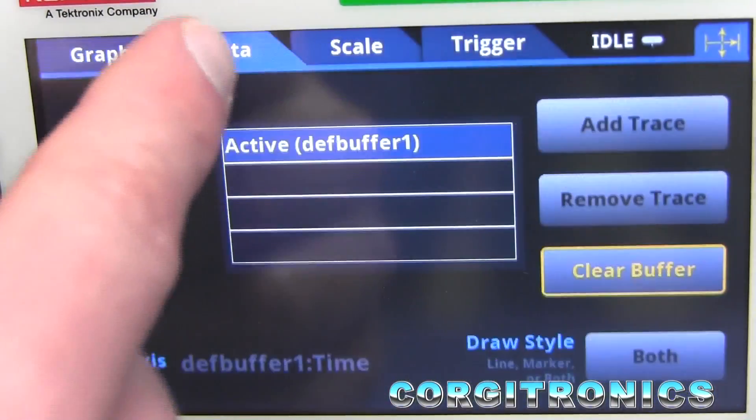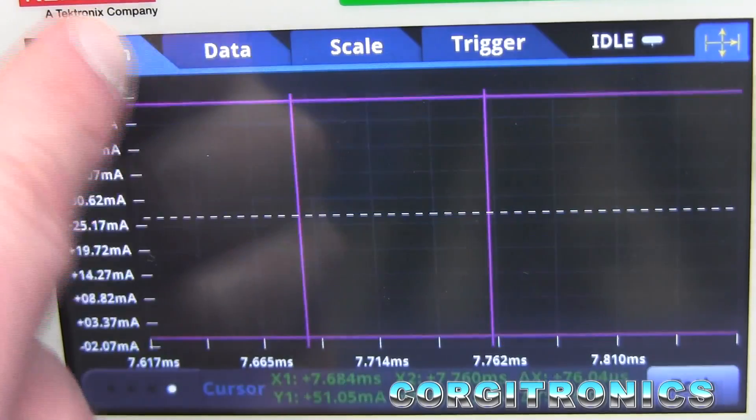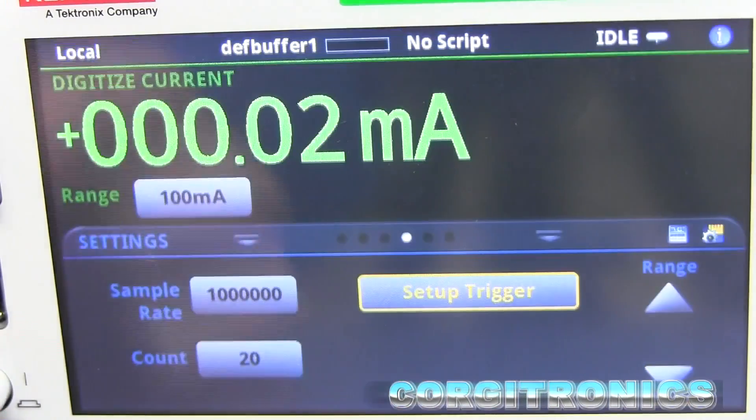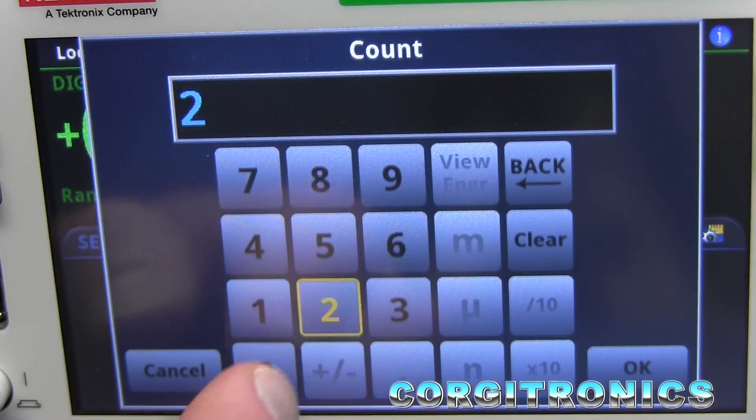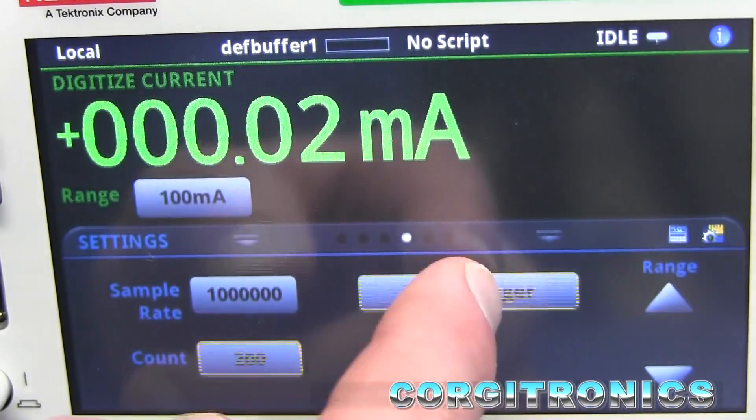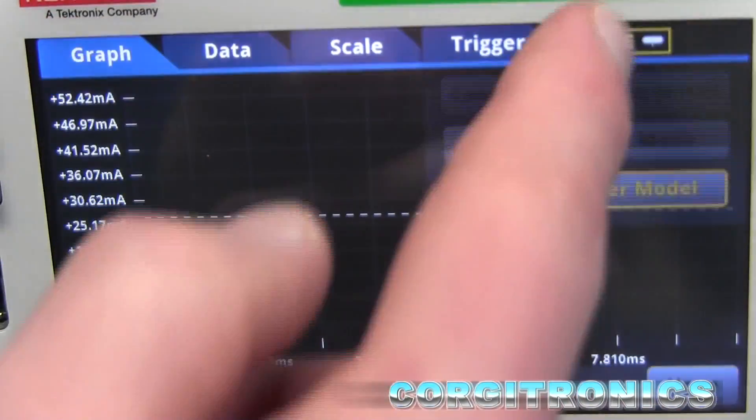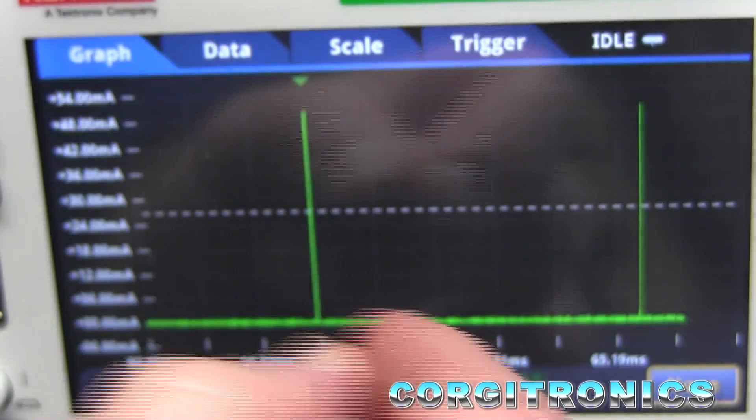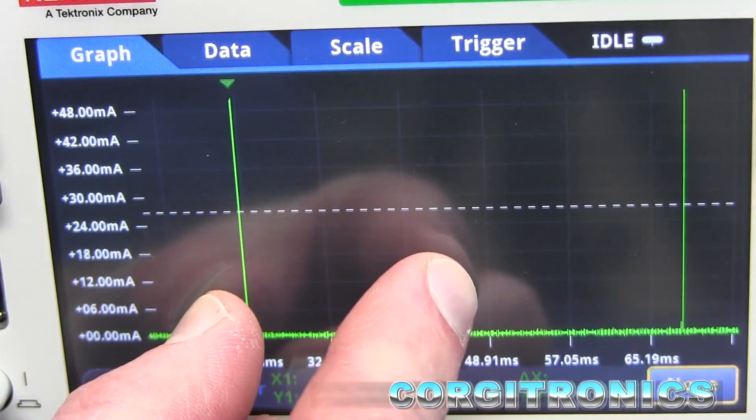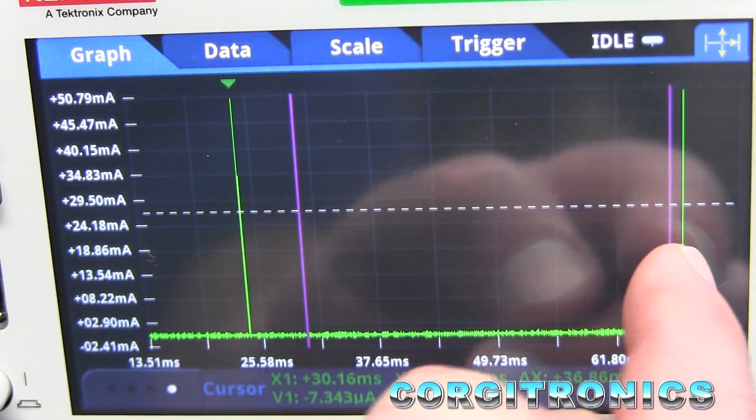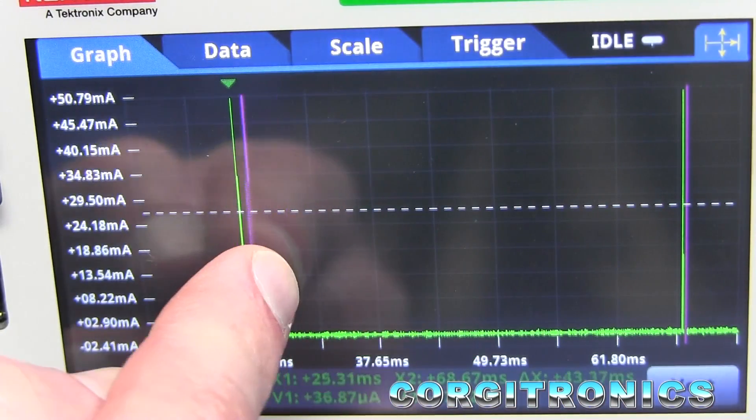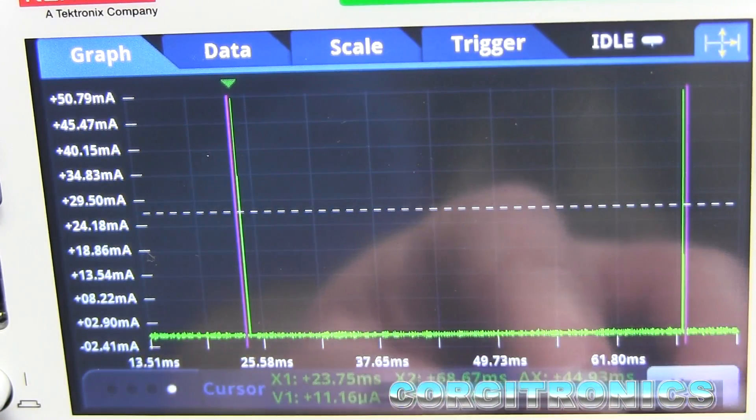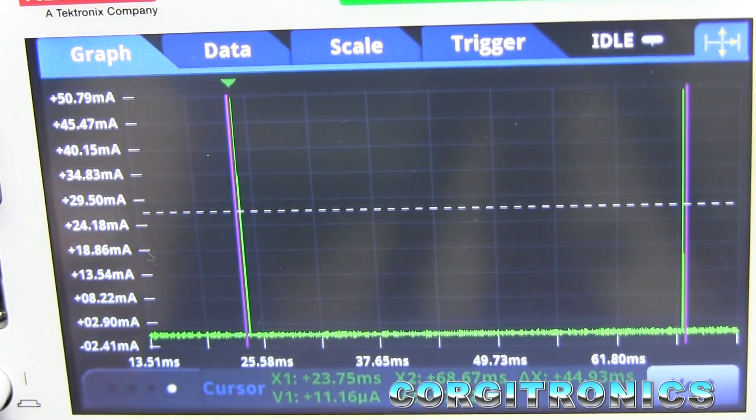Let's change the trigger a bit and see if we can get something a little more interesting on the data. Let's go back up to 200 samples again. See if we can find some of those spikes. Here we go. So our spikes are, let's grab a cursor. They appear to be about 45 milliseconds apart.